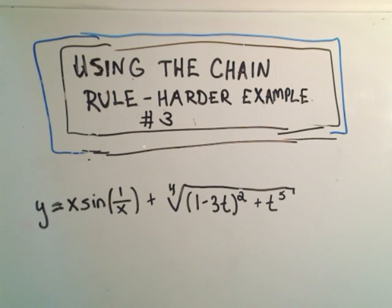So in this one, we have x times sine of 1 over x, then we have the fourth root of this quantity 1 minus 3t squared plus t to the fifth.